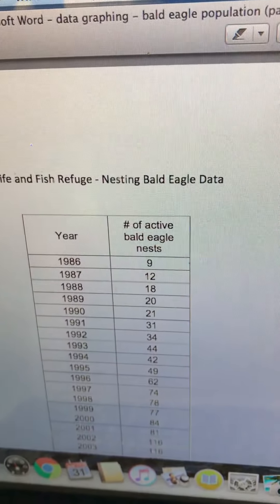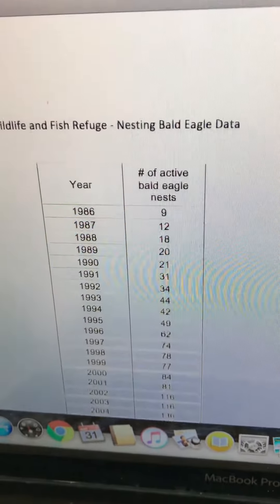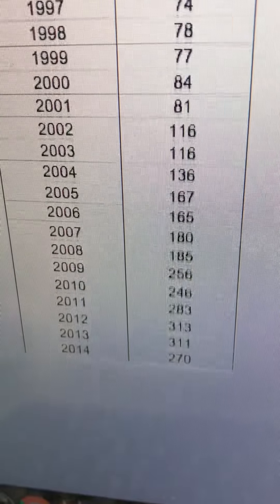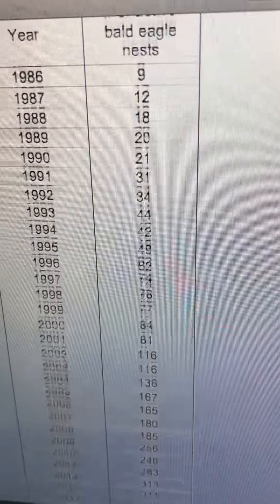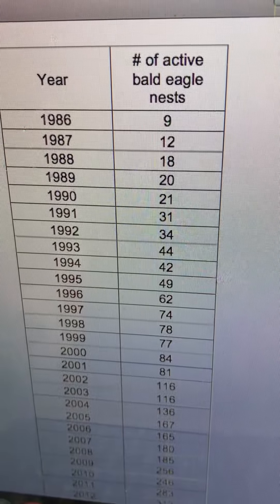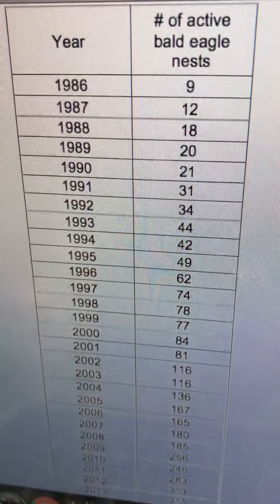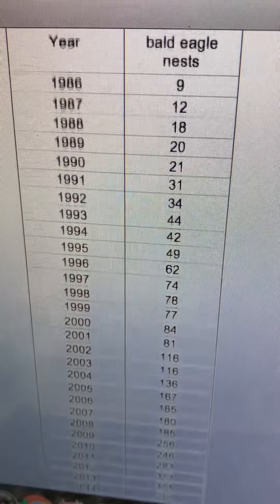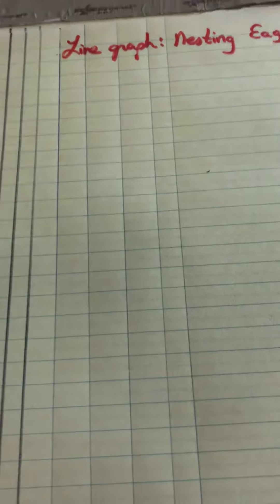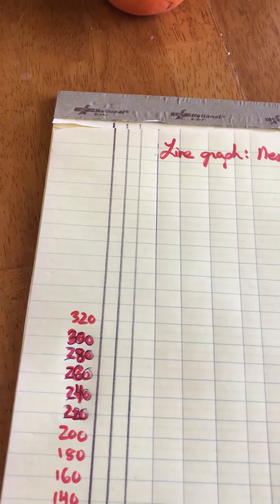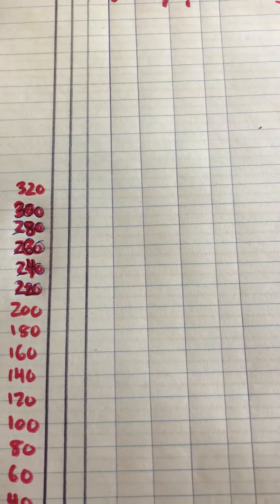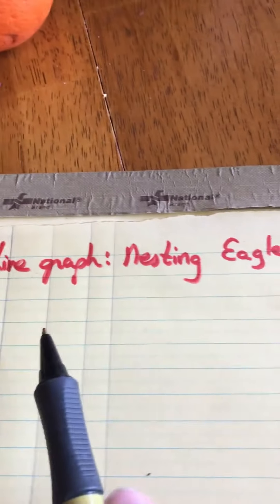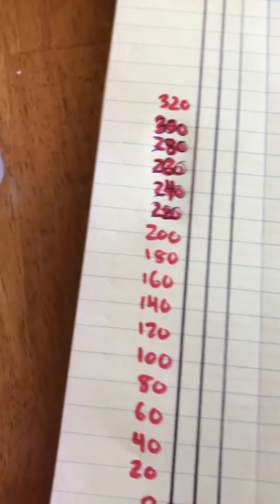We also have something that says nesting bald eagle data. And this is consecutive. It starts in 1986 and goes through 2014. And it shows how many nesting or active bald eagle nests that there are for each of those years, starting with nine and going all the way up to, well, up in the 300s. Okay. This is called a line graph. You're not making bars for this one. You're just putting points on the graph. I think you'll remember how we did this. So again, I labeled my graph, line graph, nesting eagles, or you could put nests, active nests.